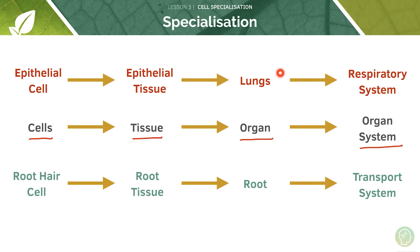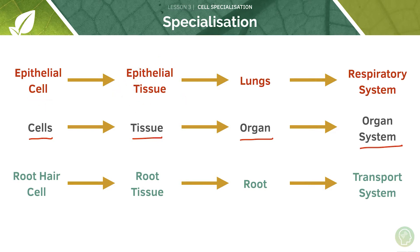What makes up the lungs? The surface exchange area is made up from epithelial tissue. And following on from that, we know that many cells make tissue, so the epithelial tissue is made up of epithelial cells.